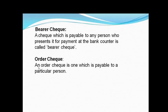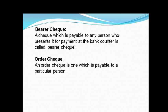An order cheque is payable to a particular person specified as the payee, or to anyone else to whom it is transferred or endorsed. We can cancel an order cheque, whereas a bearer cheque cannot be cancelled. In an order cheque, only the specified payee receives the amount.